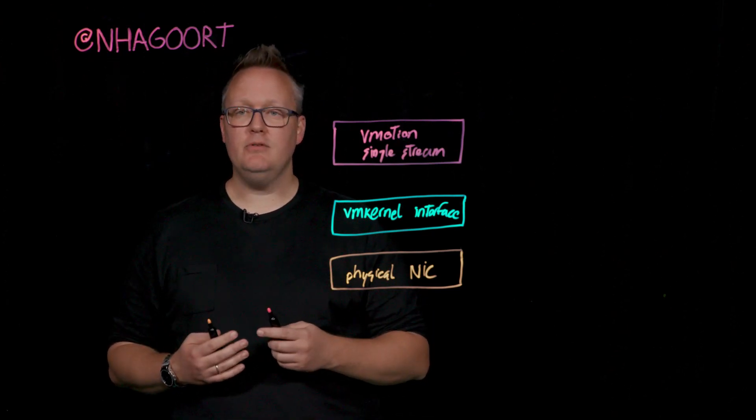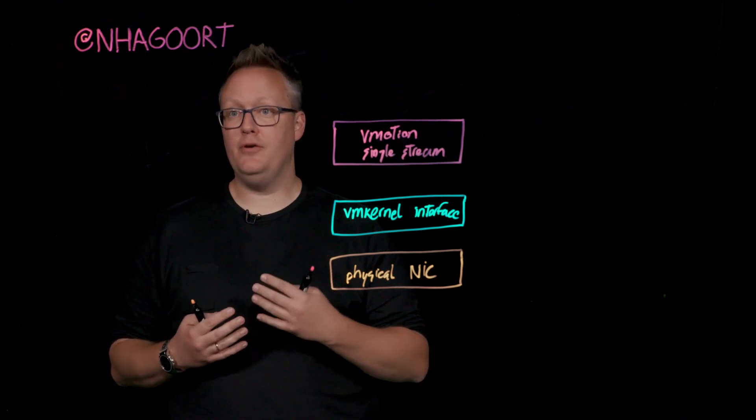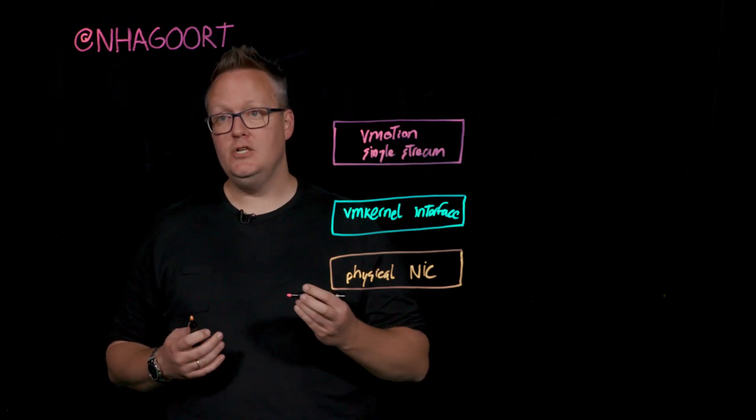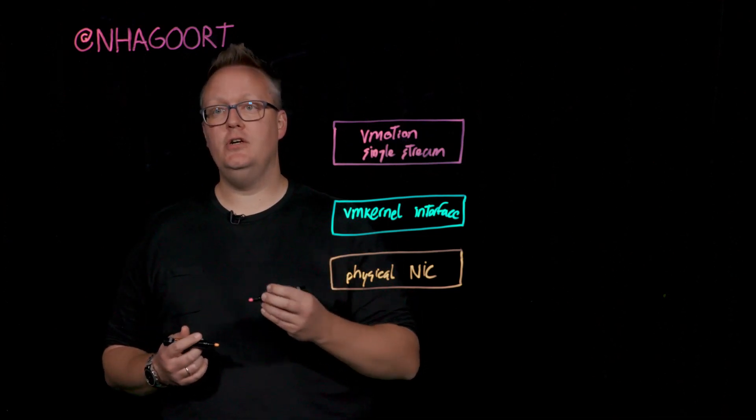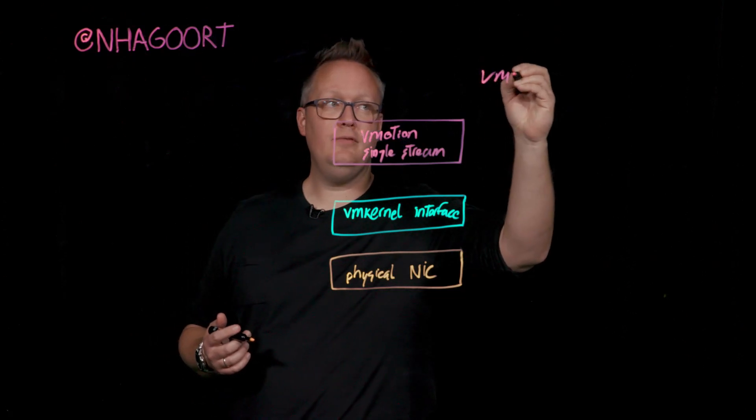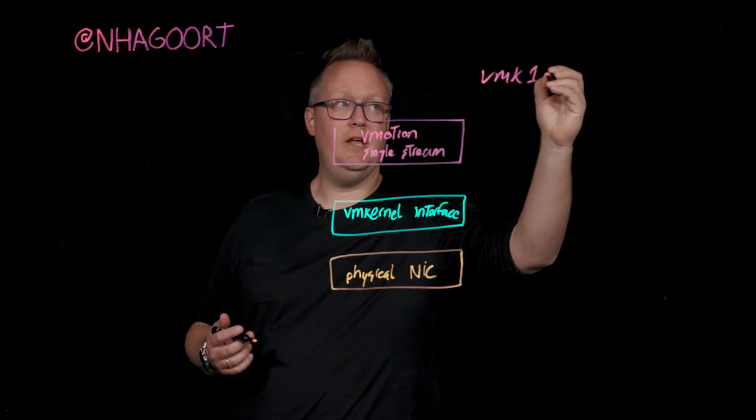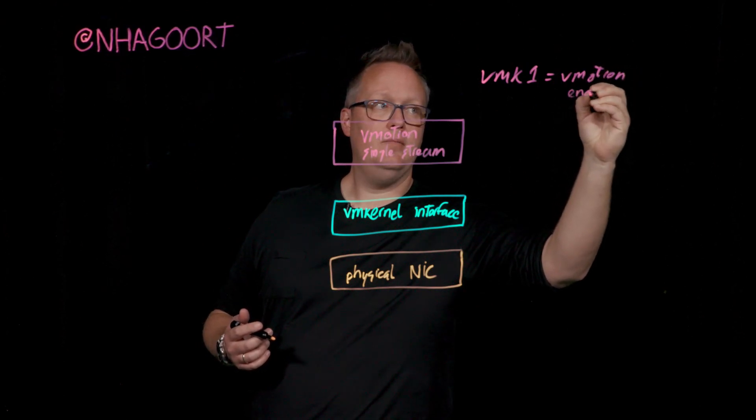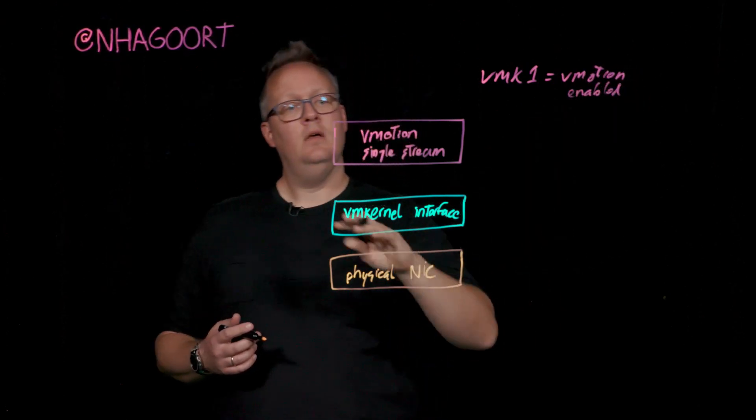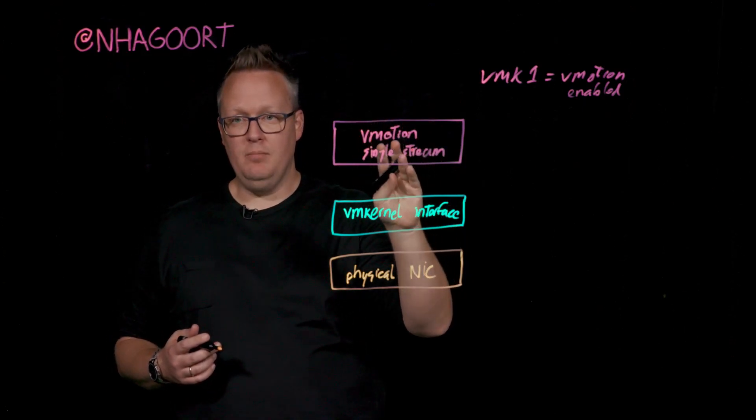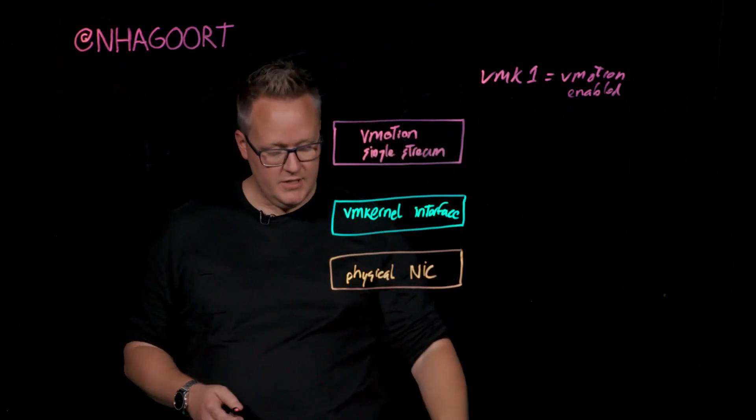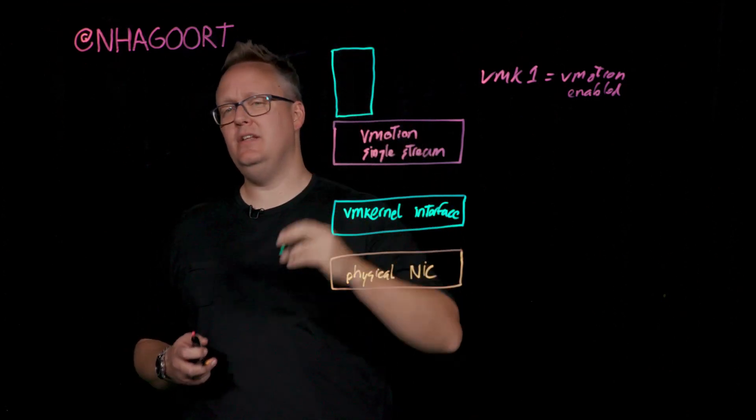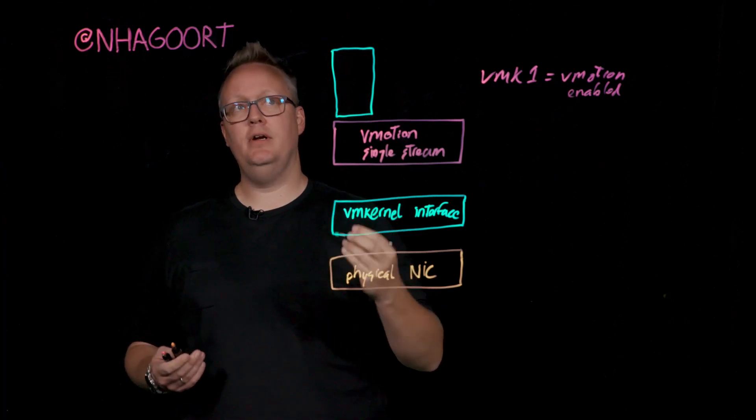The stream architecture is all about having helpers, threads in place to support the vMotion process. If, for instance, you have an infrastructure and you have like one VM kernel interface that is vMotion enabled, what happens in the background is that we have a single stream. A stream consists of multiple helpers, and a helper is really just an internal name we use. A helper is a thread.